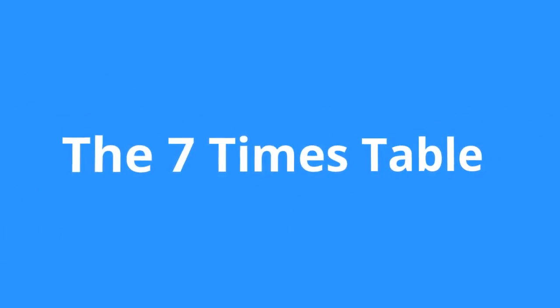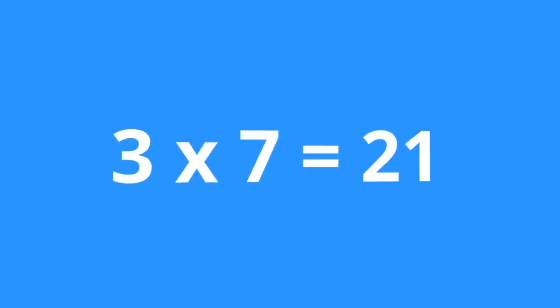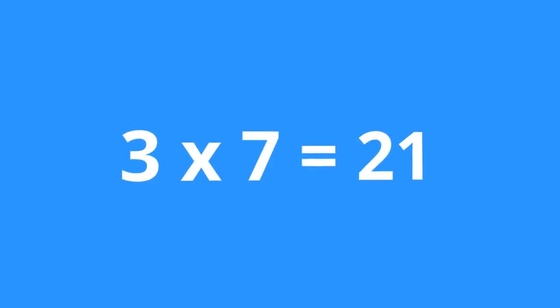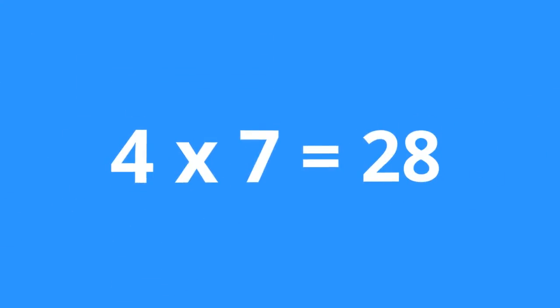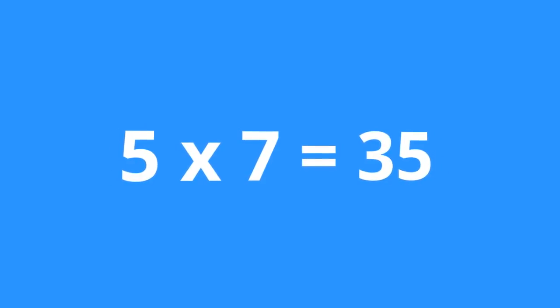The 7 Times Table. 1 times 7 is 7. 2 times 7 is 14. 3 times 7 is 21. 4 times 7 is 28. 5 times 7 is 35.